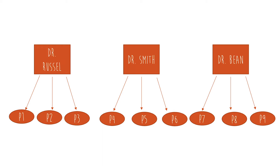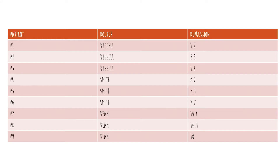Here's a handy visual. We have Dr. Russell, Dr. Smith, and Dr. Bean, each with three patients. In a data set, you'd have patients and a doctor variable indicating the cluster, and you'd see that repeating. That's a good indication you have a mixed models situation. Not only do we have clustering from therapists, siblings, or classrooms, but also when people are measured more than once.